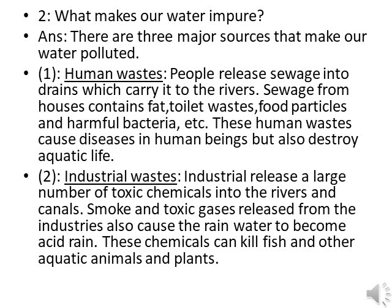When rain water becomes acidic — due to toxic gases in our atmosphere from industries — it is called acid rain. These chemicals can kill fish and other aquatic animals and plants. When these chemicals reach rivers, they destroy both aquatic plants and animals.